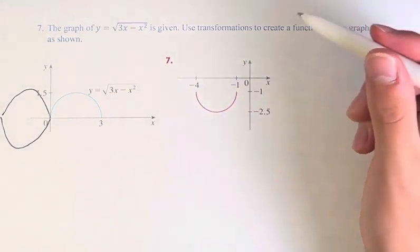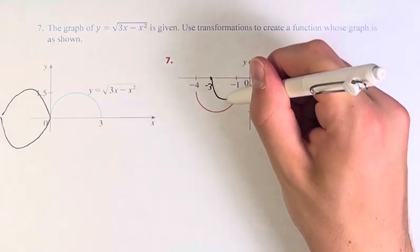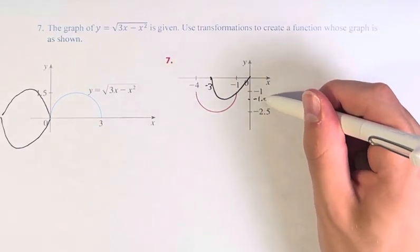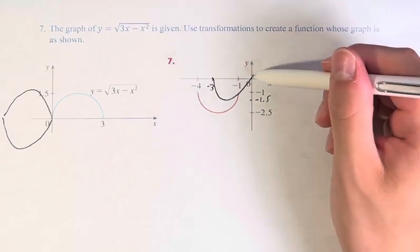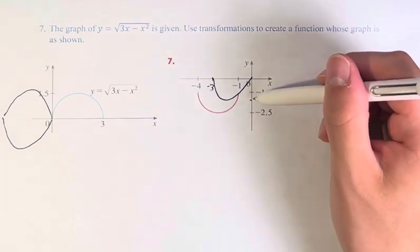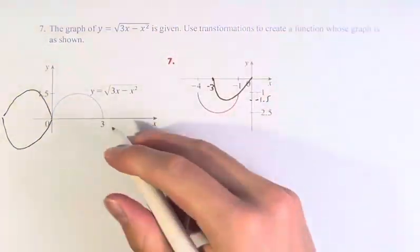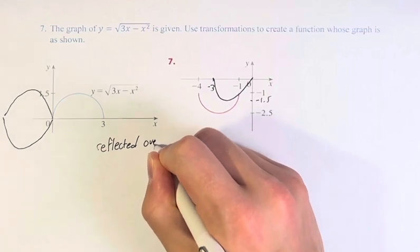Right? And the equivalent here, it would look like that, obviously not perfect, but going from 0 to negative 3 and 0 to negative 1.5. So we know that it is reflected over both axes, over the x and y.